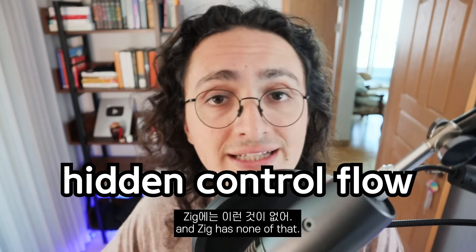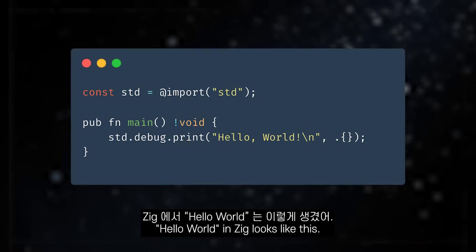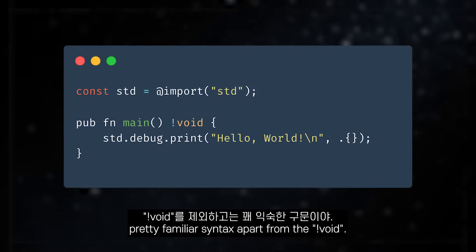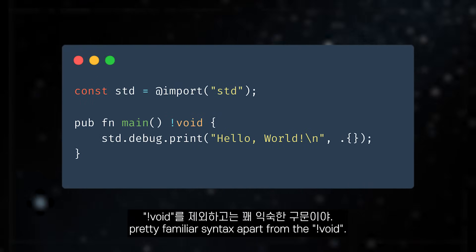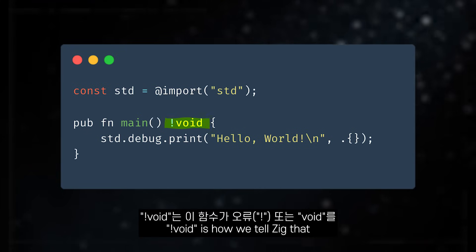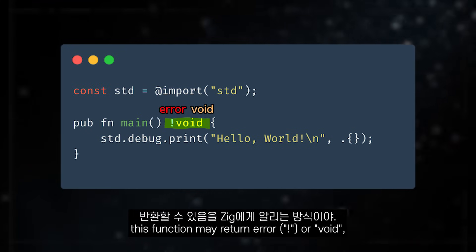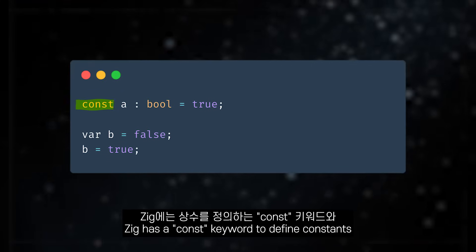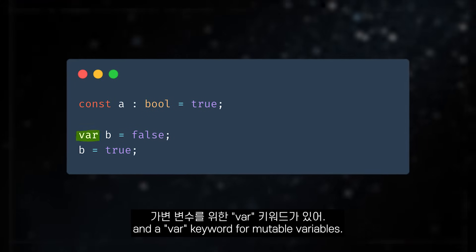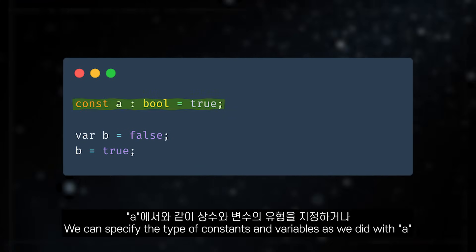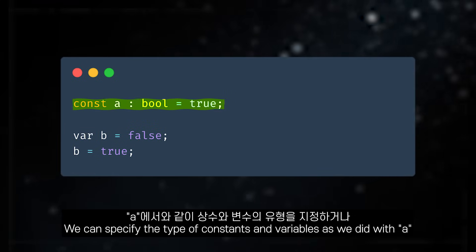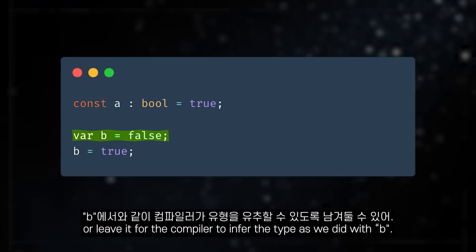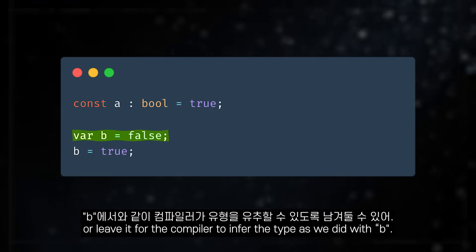This is hidden control flow and Zeek has none of that. Hello world in Zeek looks like this. As you can see, pretty familiar syntax apart from the exclamation mark void. Exclamation mark void is how we tell Zeek that this function may return an error or void — more on that soon. Zeek has a const keyword to define constants and a var keyword for mutable variables. We can specify the type of constants and variables as we did with A, or leave it for the compiler to infer the type as we did with B.